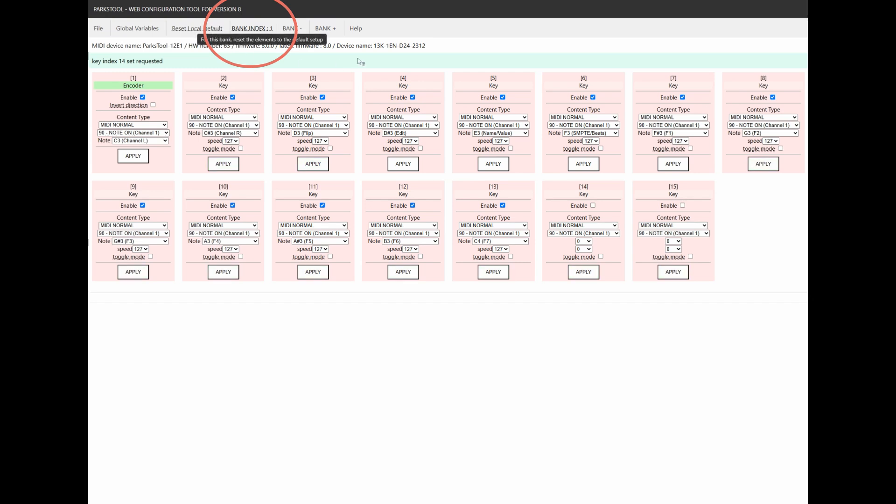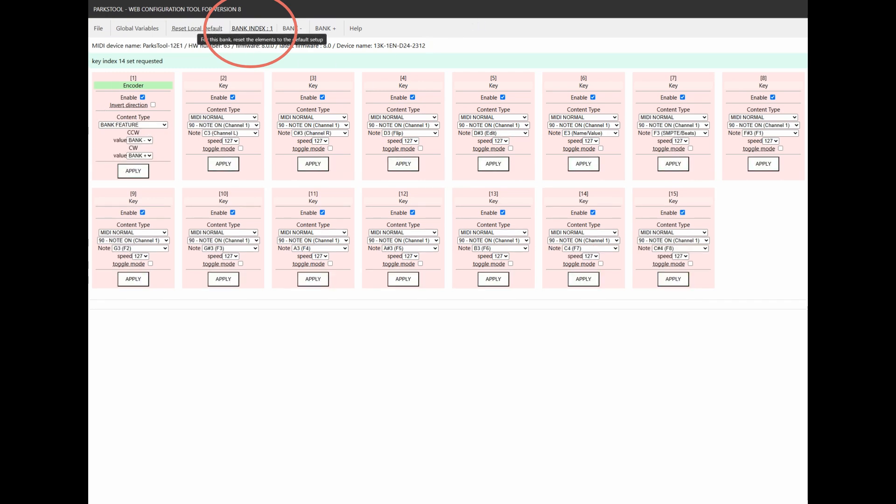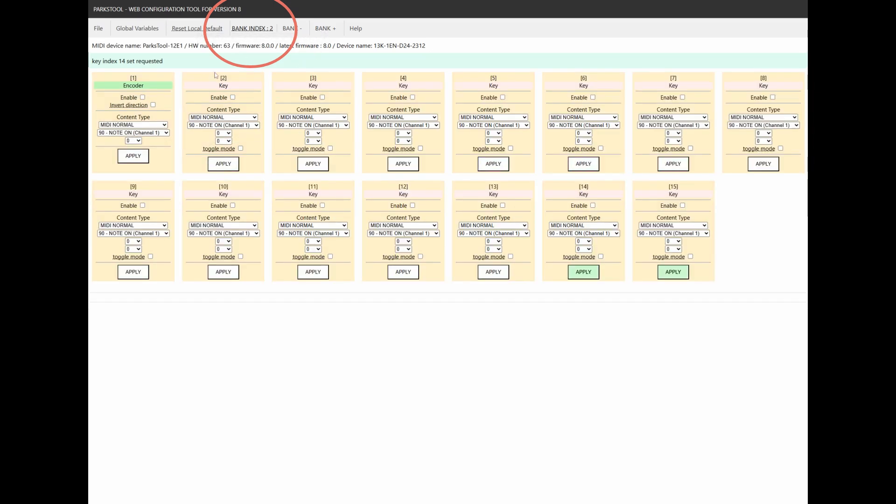As you can see, the encoder now supports Bank Minus and Bank Plus functionality when turned left or right. Repeat this setup for each bank, and once it's done, the encoder will allow you to switch banks up and down smoothly.